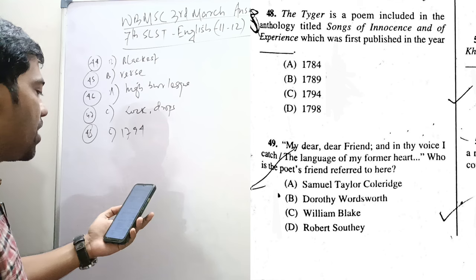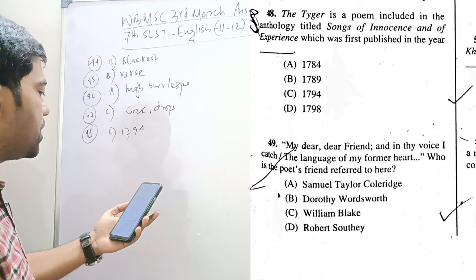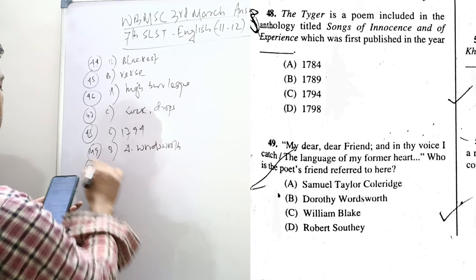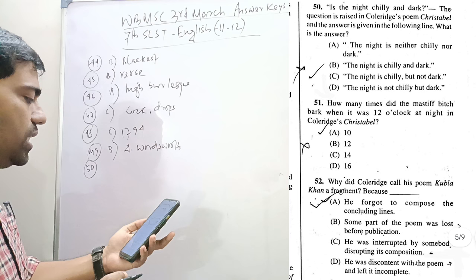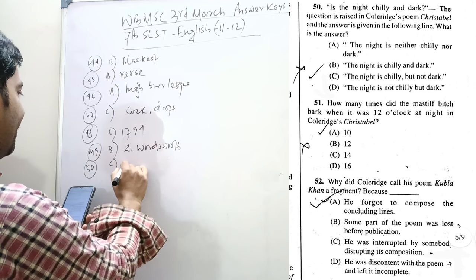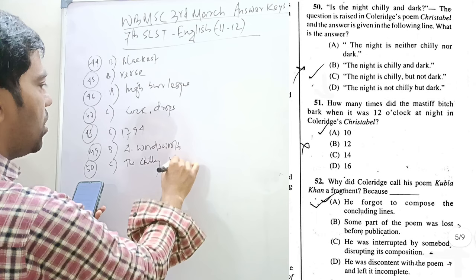My dear, dear friend, and in thy voice I catch the language of my former heart. Who is the poet's friend referred to here? It is simple. Dorothy Wordsworth. Question 50. Is the night chilly and dark? The question is raised in Coleridge's poem Christabel, and the answer given in the following line. What is the answer? The answer is, the night is chilly, but not dark.